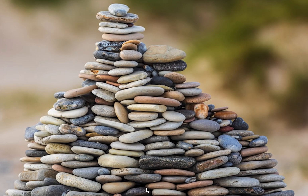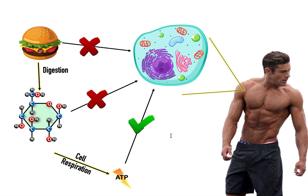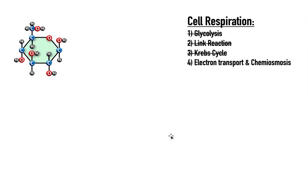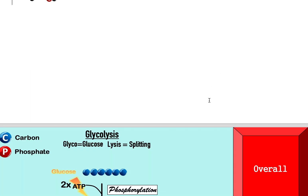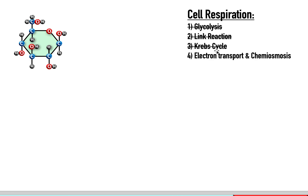We're going to finish the process of cell respiration. So far we have done glycolysis, the link reaction, and the Krebs cycle. The final stage of cell respiration is the electron transport chain and chemiosmosis, and this will all make sense at the end of this video. Let's quickly review what we did to get up to date.